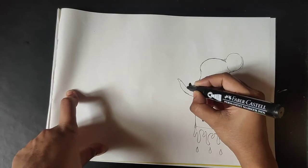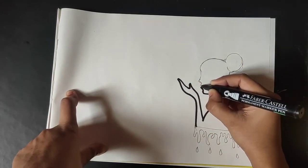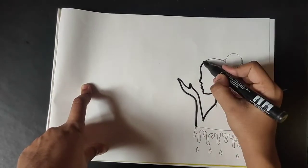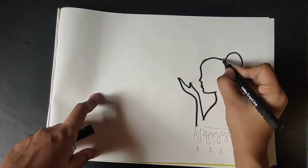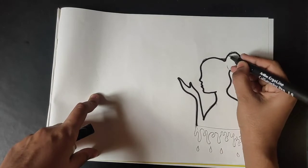Now with black sketch pen we have to do the outline. After outlining, fill it with black sketch pen or marker.